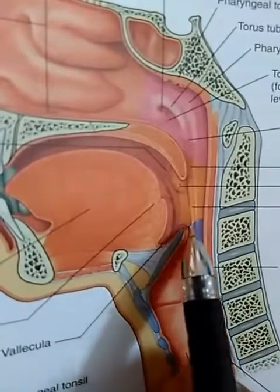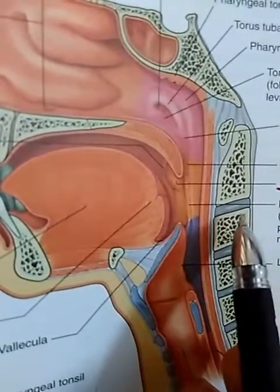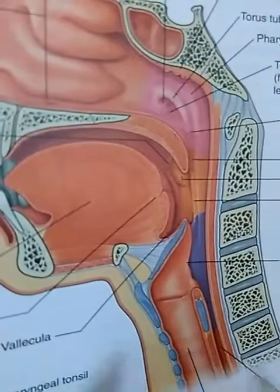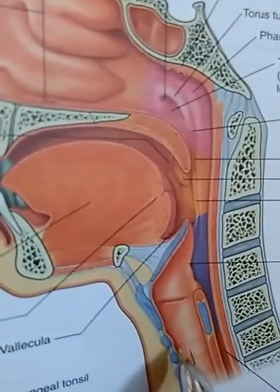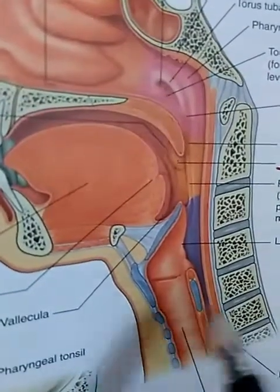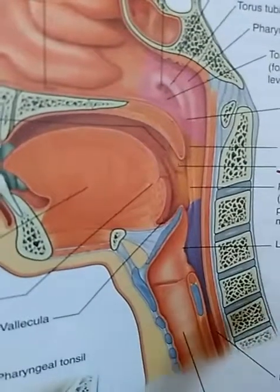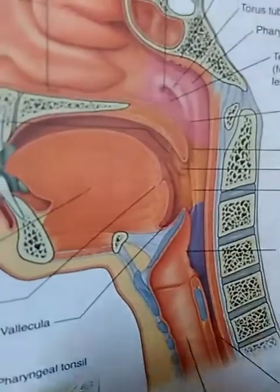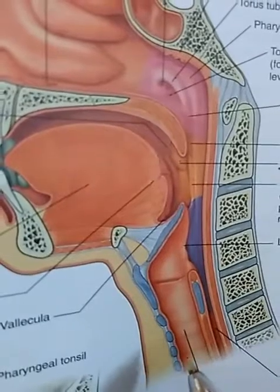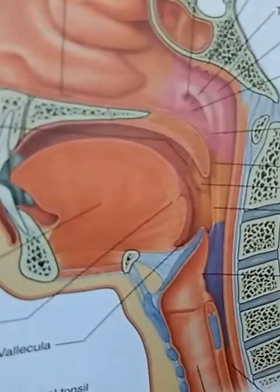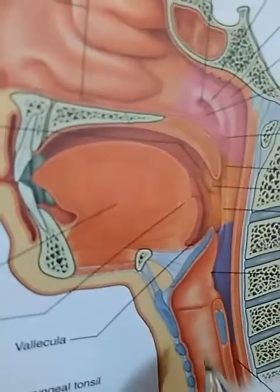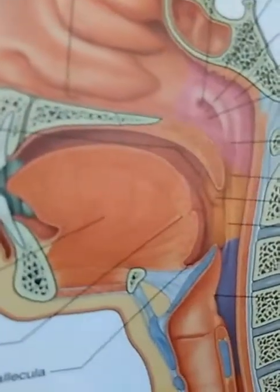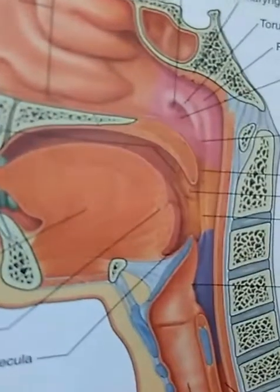The hypopharynx or laryngopharynx extends from the level of the hyoid bone down to the lower border of the cricoid cartilage, corresponding to the C6 vertebra. So it spans levels C3 to C6. There are approximately three structures within it: the pyriform sinus, the post-cricoid region, and the posterior pharyngeal wall.